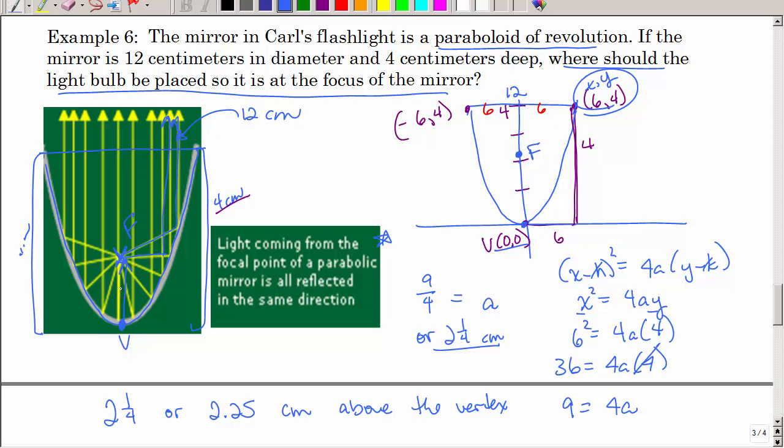Find paraboloids all around you. From satellite dishes, you need to have that receiver at the focus. To look around bridges, all kinds of things.